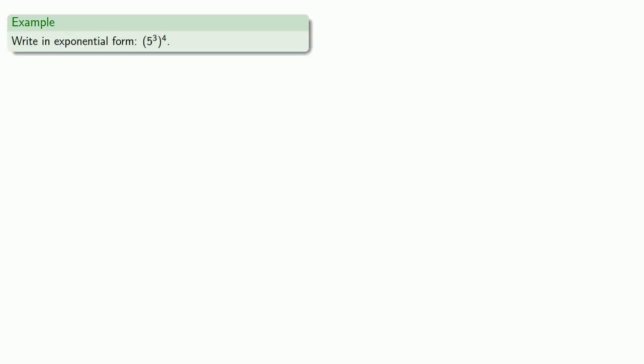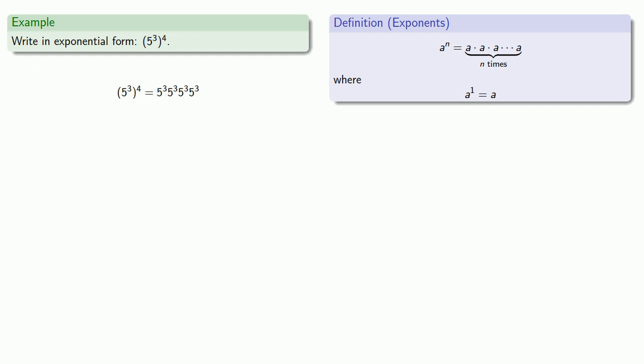How about a power of a power, 5 to the third to the fourth? So a good way to start is to pull in the definition. And that tells us 5 to the third to the fourth is going to consist of 4 copies of 5 to the third.